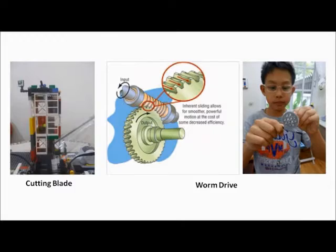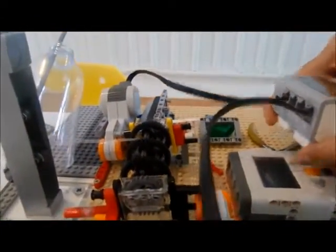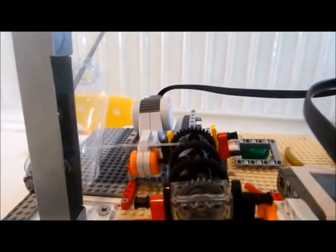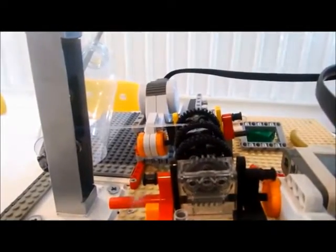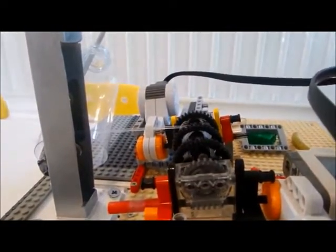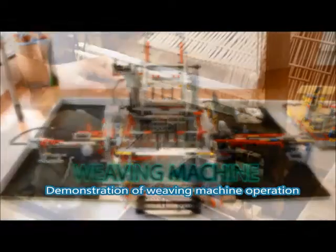It's automatic, with two motors that spin gears to pull the string out. When finished with one bottle, we can transfer the string onto the weaving machine.